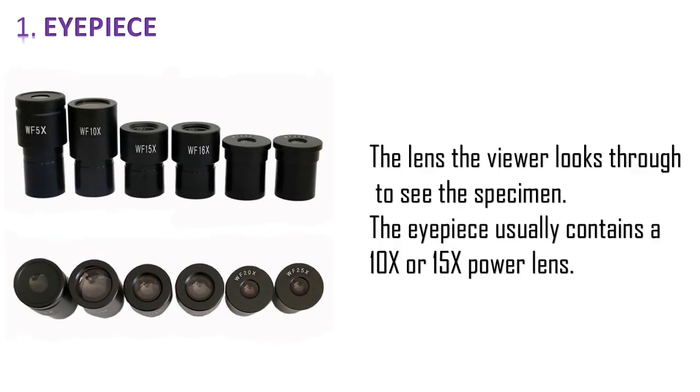Part number 1. It's eyepiece. So what is eyepiece of a microscope? It is the lens the viewer looks through to see the specimen. And the eyepiece usually contains 10x or 15x power lenses. It is near to the eyes of the viewer or the observer.